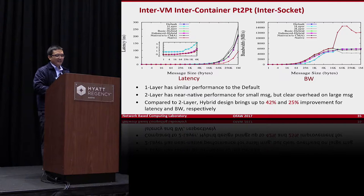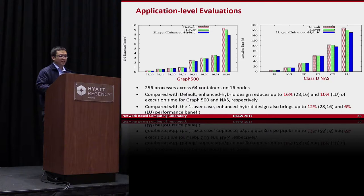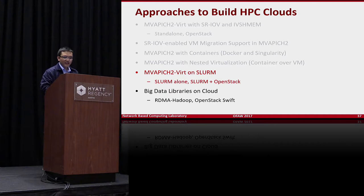For inter-socket communication, we achieve around 42% and 25% improvement in latency and bandwidth. For applications, we also see around 16% performance benefit with our two-layer design.